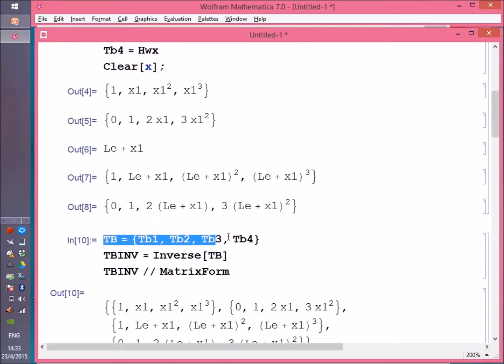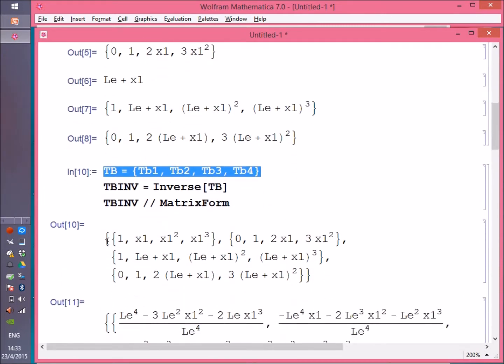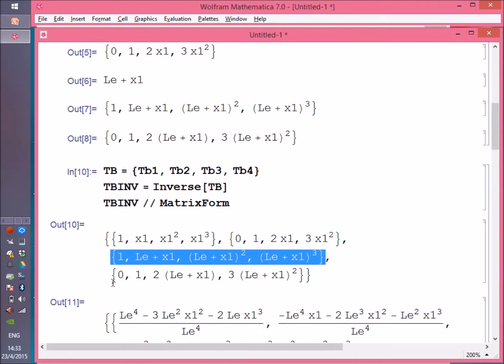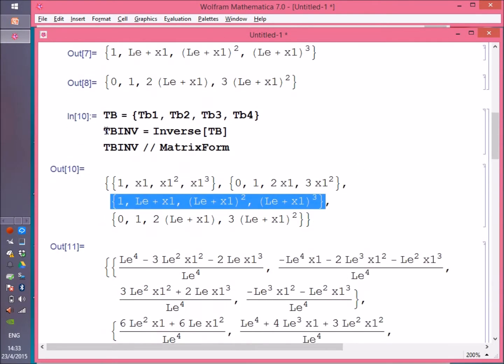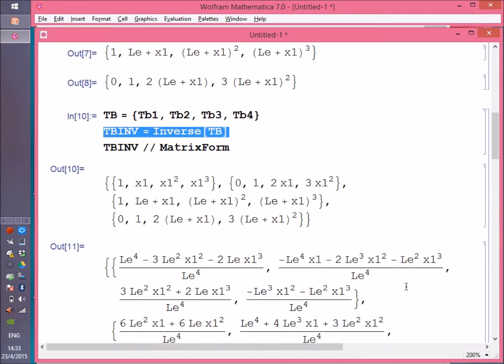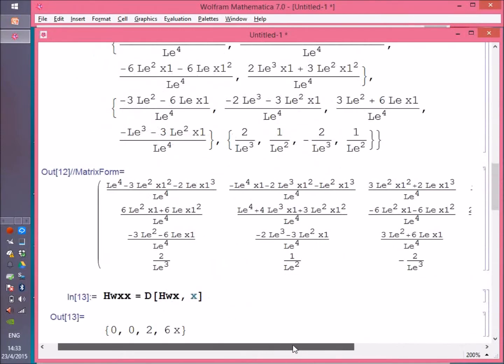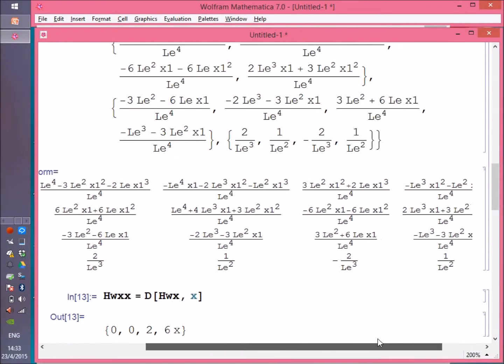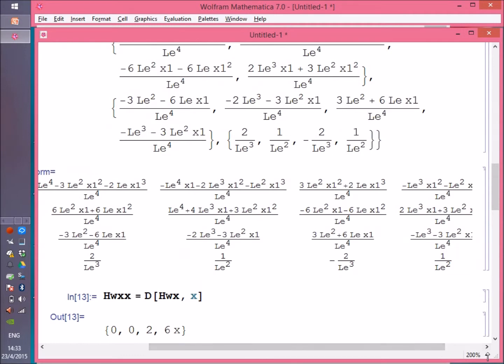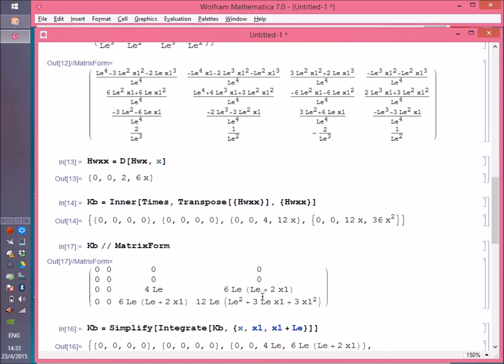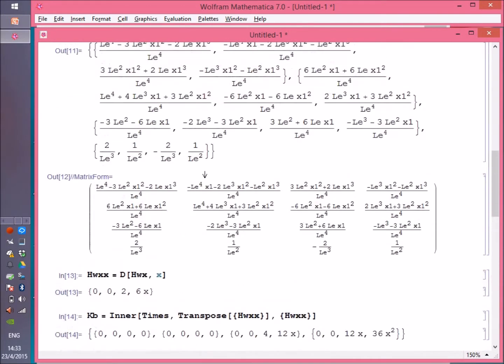Here you are, these are the four vectors. Then I assembled the four vectors in a single matrix called TB. Here is how it looks—each of these is a row matrix. Then I asked Mathematica to invert it, and the inverse was presented in matrix form. As you can see here, this is the whole TB inverse.